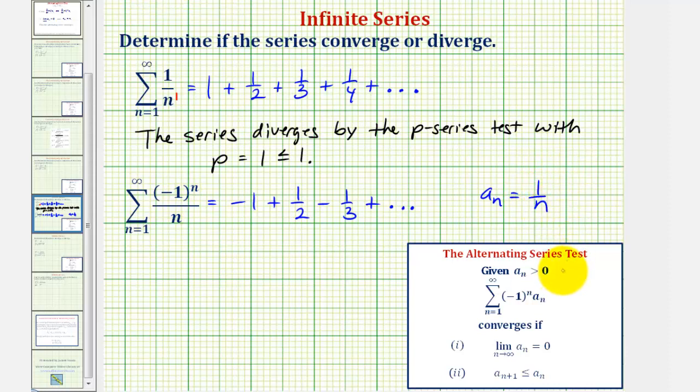So first notice that a sub n is greater than zero for all values of n. And now we'll determine the limit as n approaches infinity of a sub n. Notice as n approaches infinity, the numerator stays at one, the denominator increases without bound, and therefore this limit is equal to zero.